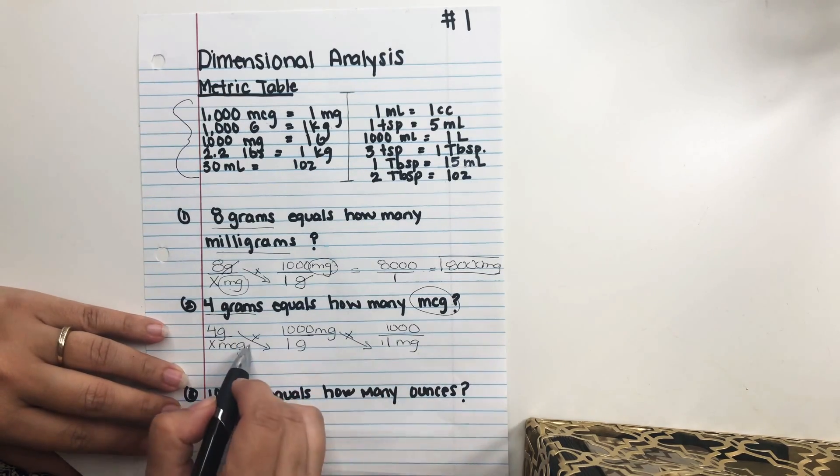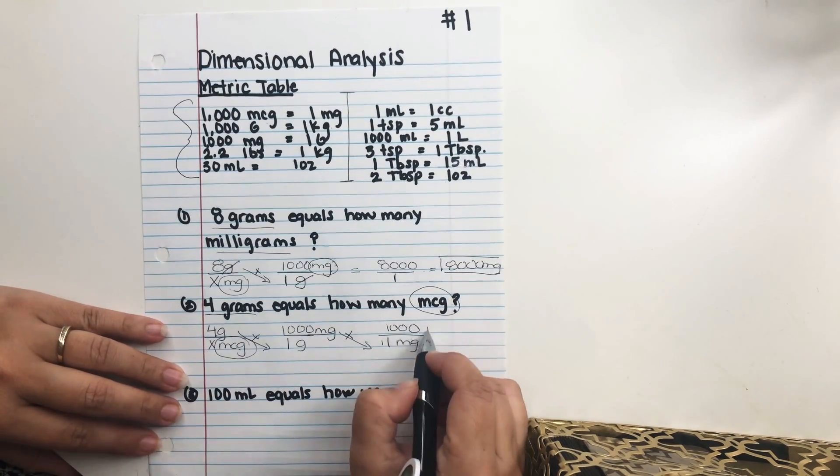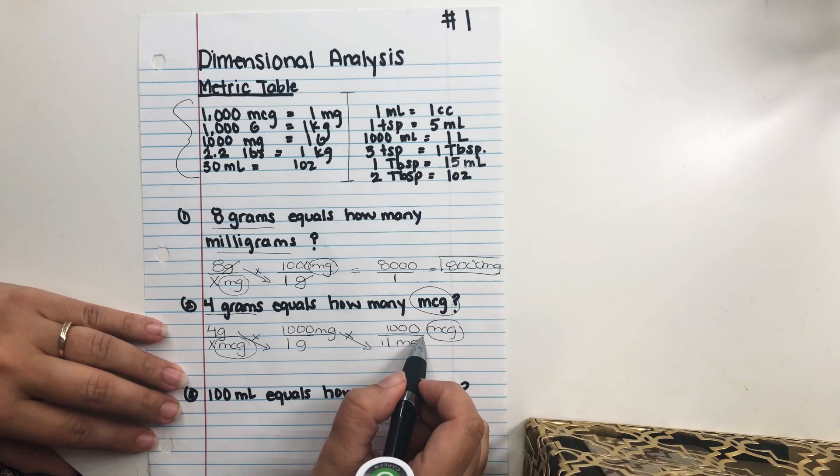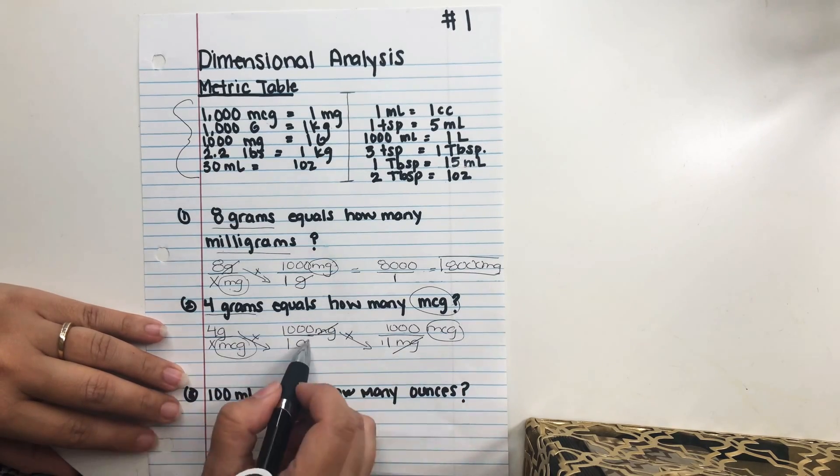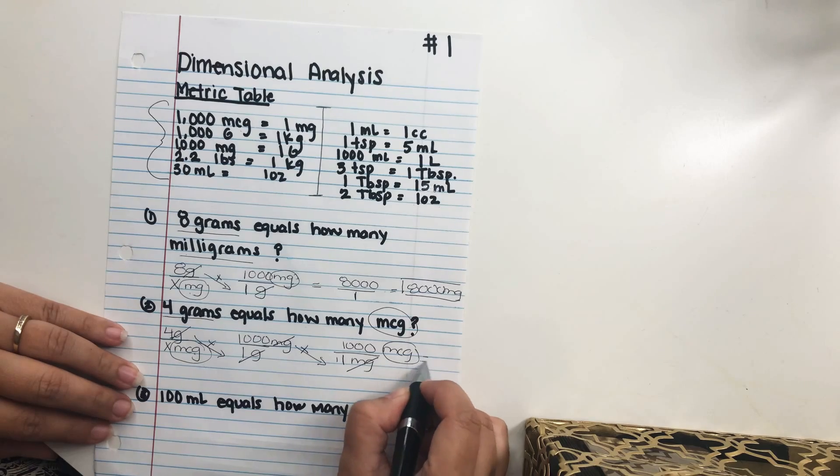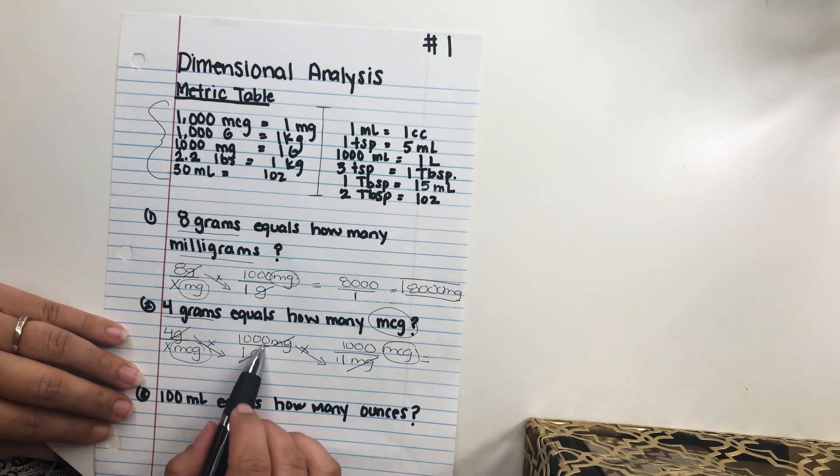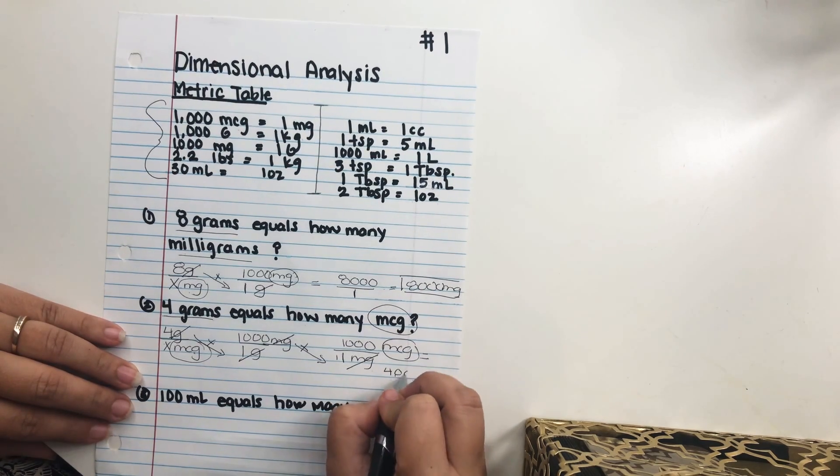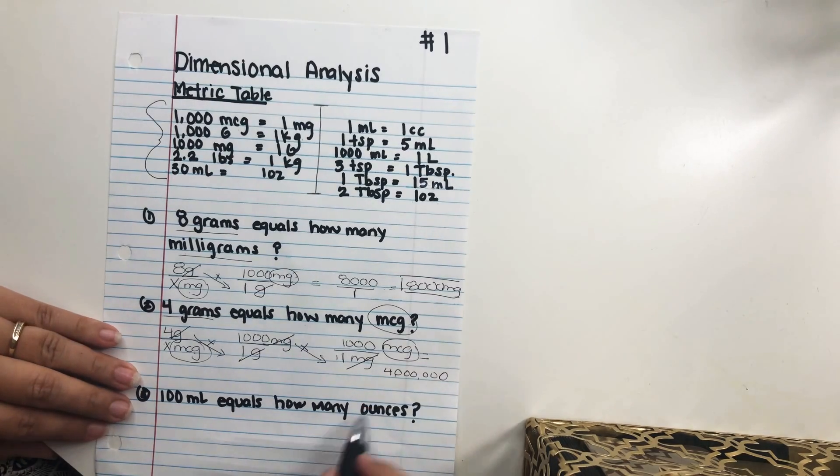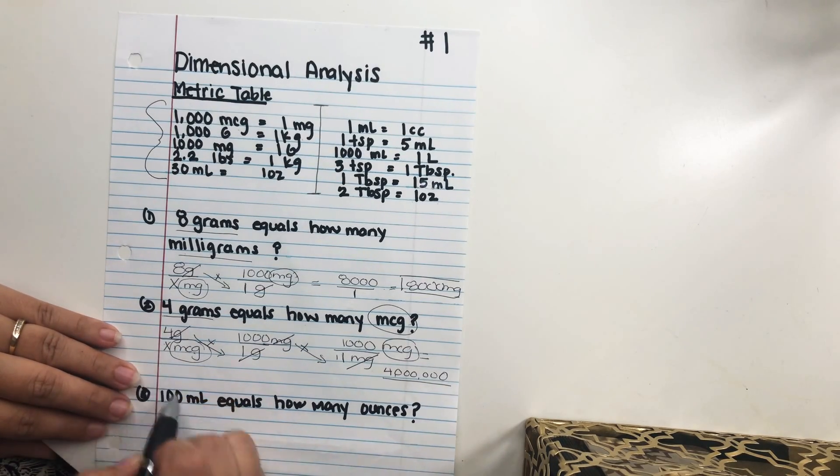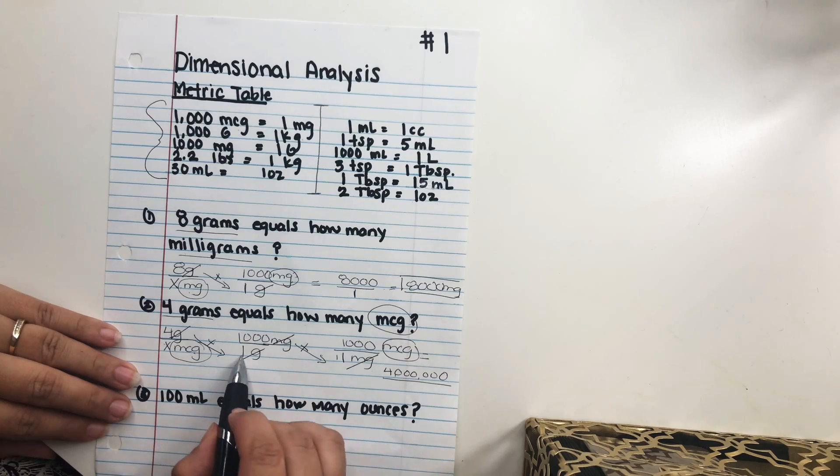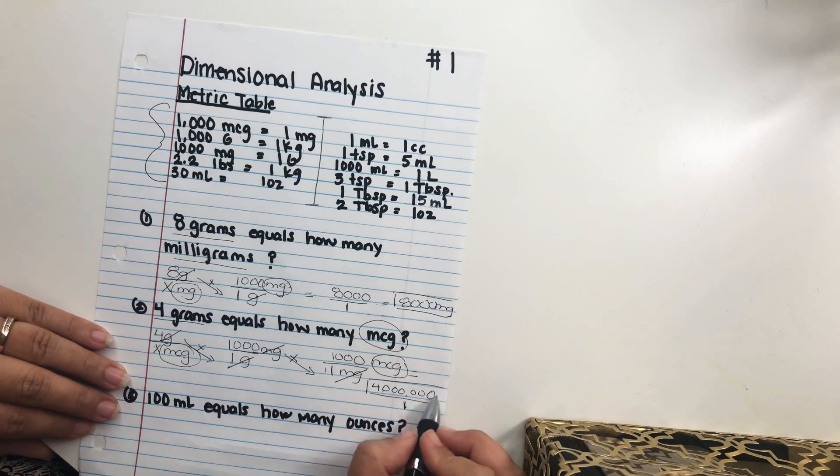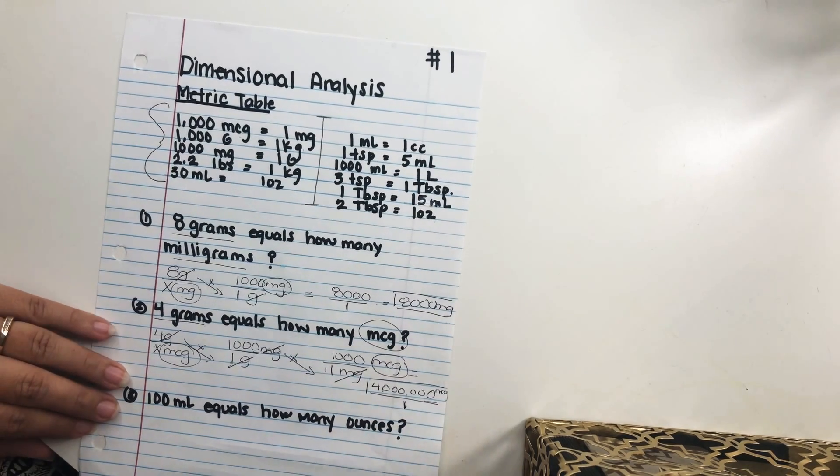So now we go ahead and we cancel out. We needed micrograms and we have micrograms here. So that's how we know when we're done converting. We're going to go ahead and cancel out our milligrams and our grams. And we are going to multiply across. So 4 times 1,000 times 1,000 equals 4 million, right? And then X, we're just going to leave it as 1. 1 times 1 equals 1. So your answer is 4 million micrograms. Very easy.